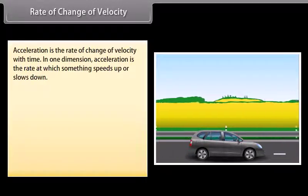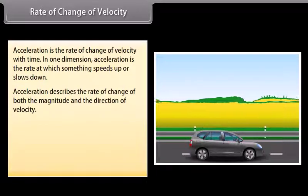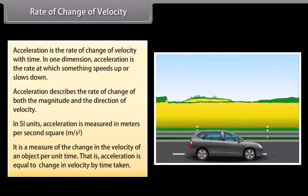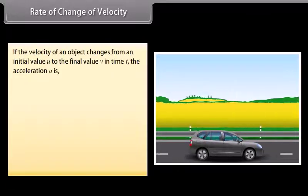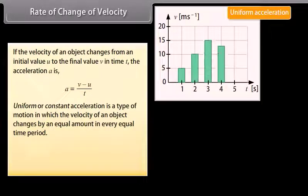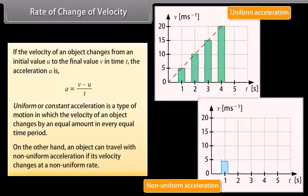Rate of change of velocity. Acceleration is the rate of change of velocity with time. In one dimension, acceleration is the rate at which something speeds up or slows down. Acceleration describes the rate of change of both the magnitude and the direction of velocity. In SI units, acceleration is measured in meters per second squared. Acceleration equals change in velocity divided by time taken. If the velocity of an object changes from initial value U to final value V in time T, the acceleration A equals (V minus U) divided by T. Uniform acceleration means the velocity changes by an equal amount in every equal time period. An object can also travel with non-uniform acceleration if its velocity changes at a non-uniform rate.